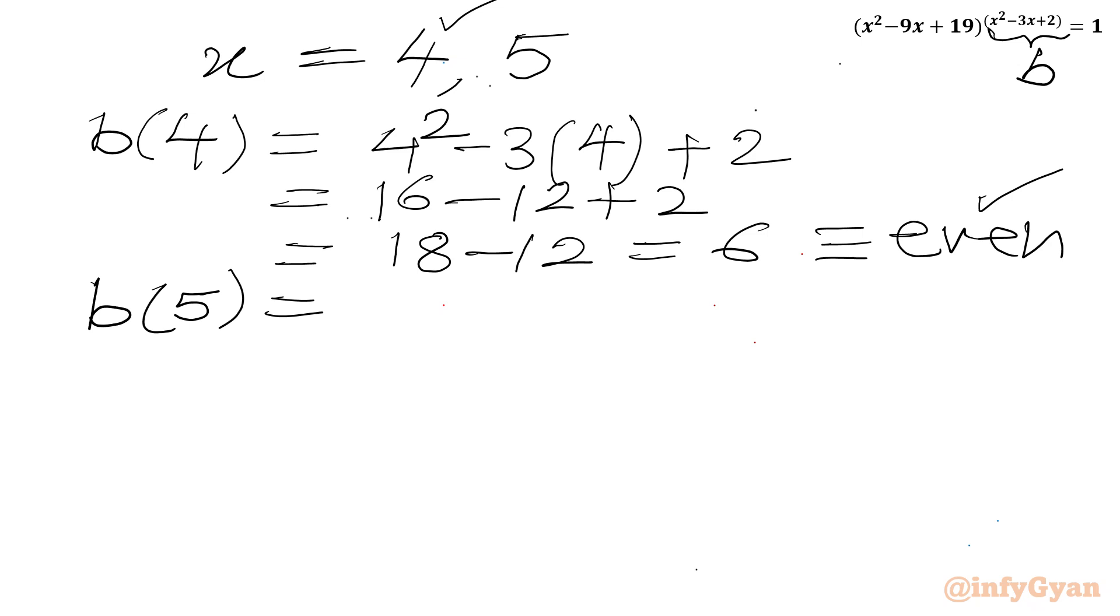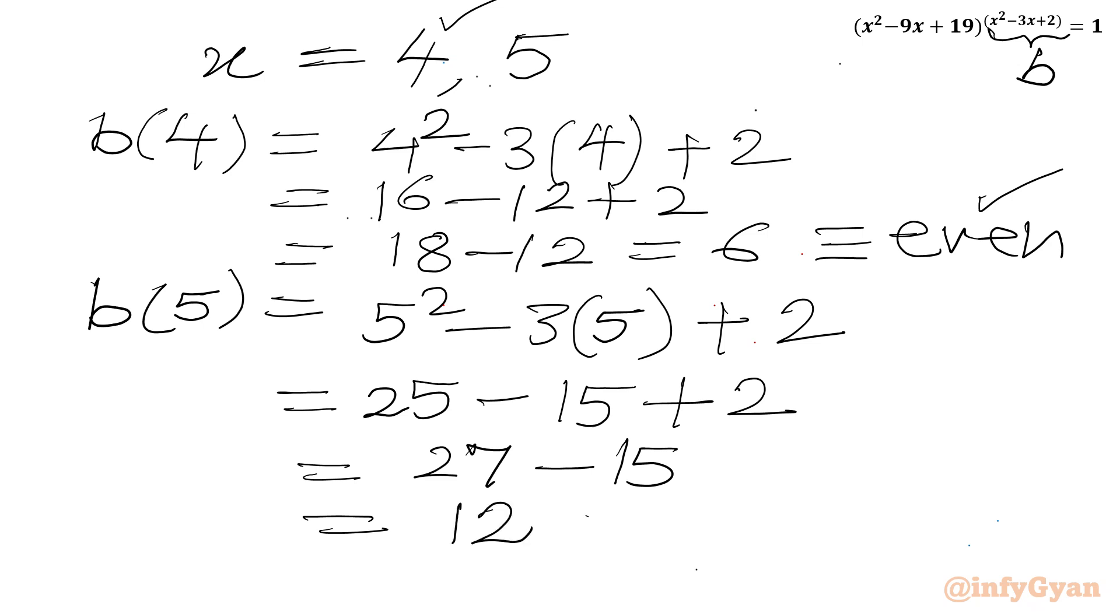Now calculate b of 5. So I will write 5 square minus 3 times 5 plus 2. This will equal to 25 minus 15 plus 2. So 27 minus 15 is 12. I will write this is an even number. So 5 is also accepted solution.